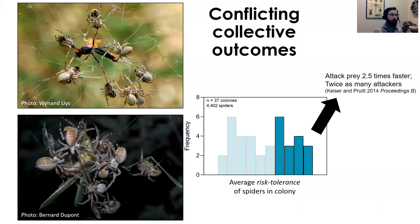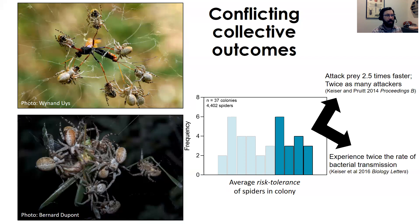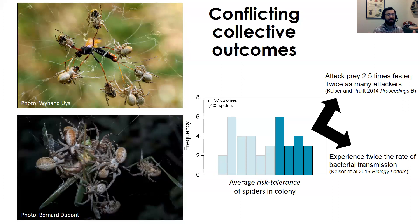However, we've also found that these bold-dominated colonies experience twice the rate of bacterial transmission relative to other group compositions. And if those bacteria are pathogenic, this sets up a clear trade-off between these two collective outcomes.